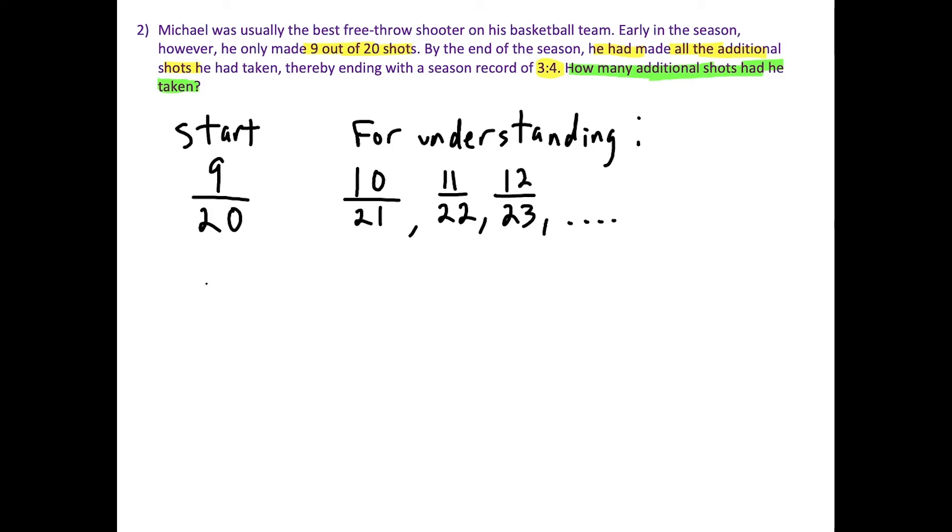So then what we have to think about equation wise is that how many additional shots does he have to take to end with a record of 3 to 4? Well, he has to take x additional shots. So now he makes 9 plus x additional shots. And that means he would have taken 20 plus x shots in total.